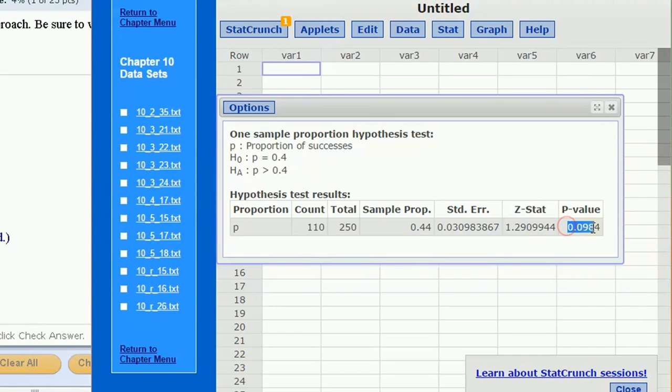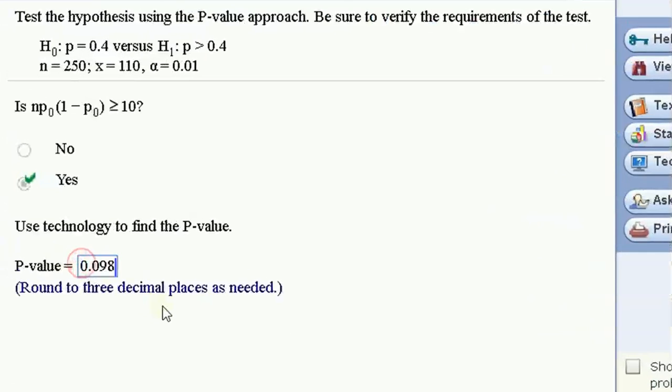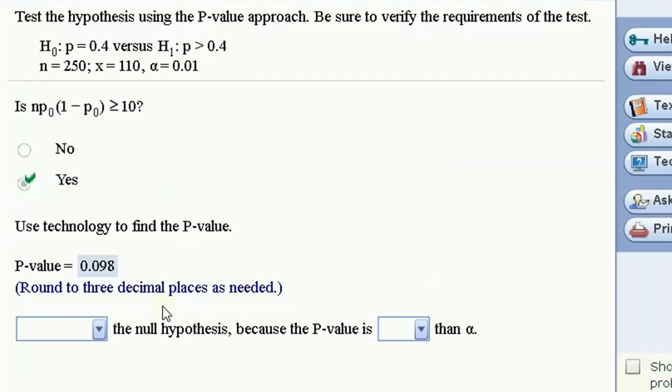So, all we need here is the p-value. Let's just copy it in with three decimal places, 0.0984.